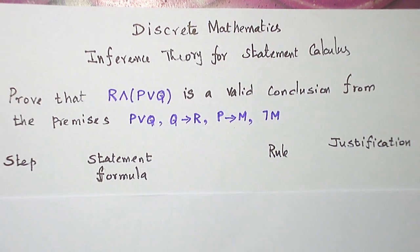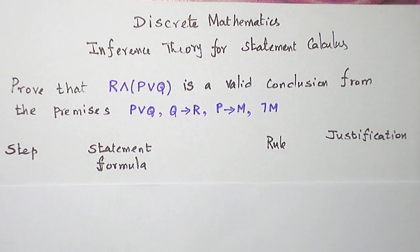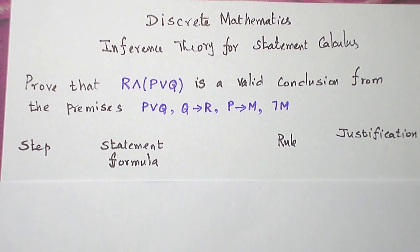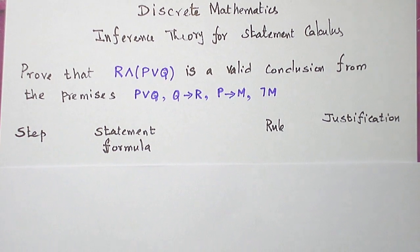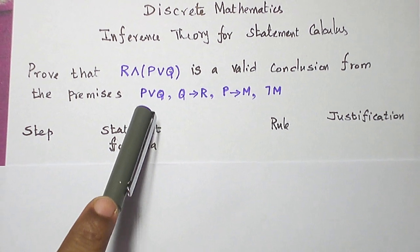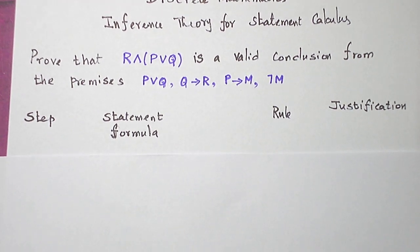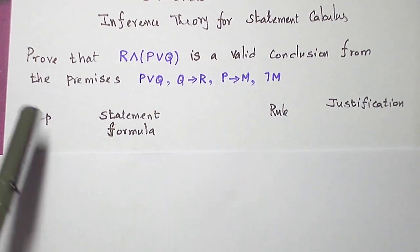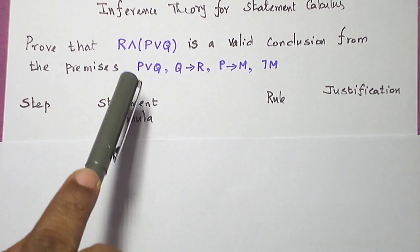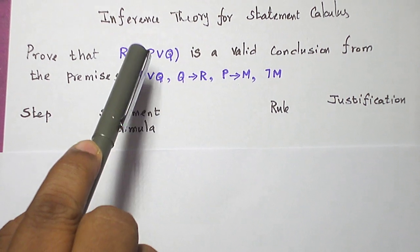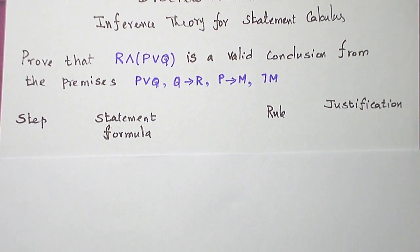Hello students, today let us see a problem in the topic inference theory for statement calculus from the subject discrete mathematics. We are given four premises: P∨Q, Q conditional R, P conditional M, and negation M. When we combine these four premises, they logically lead to a conclusion R and P∨Q. This is what we are asked to prove.